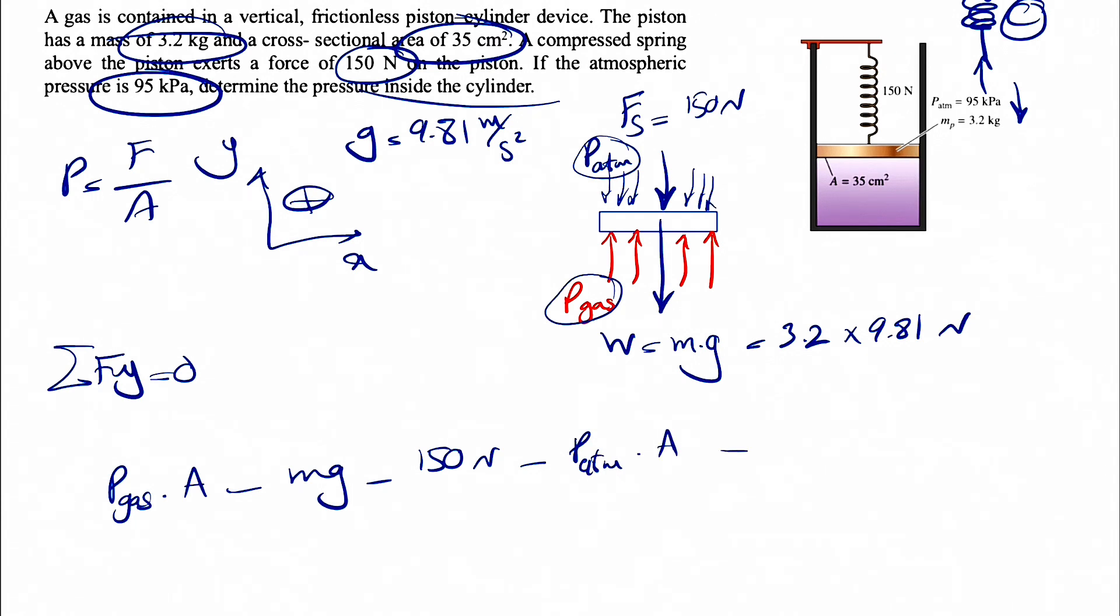Minus the atmospheric pressure, which is P atmosphere. Again, we're going to multiply it by A in order to get it in Newton or in force unit.